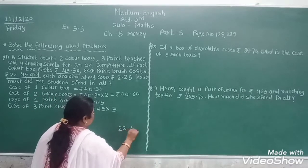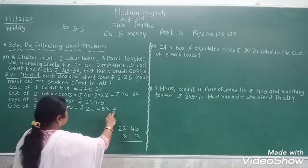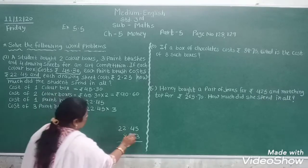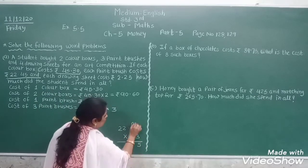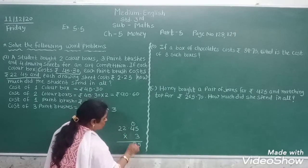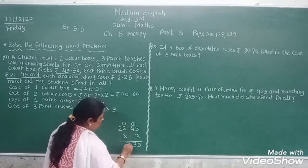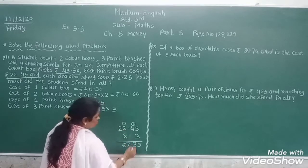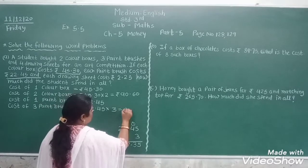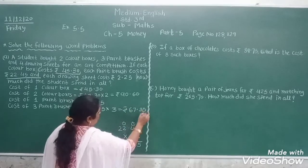Calculating: 3 fives are 15 — write 5, carry 1. 3 fours are 12, and 1 is 13 — write 3, carry 1. 3 twos are 6 and 1 is 7. 3 twos are 6. So the result is Rs. 67.35 paise. We write here Rs. 67 and 35 paise.